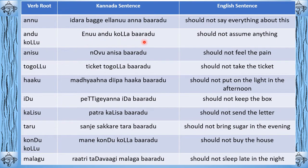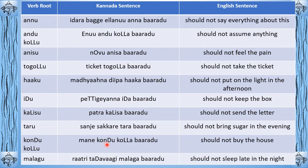'Annu' — 'idara bagge yellanu annabaradu' — should not say everything about this. Note: 'ellanu' means everything. 'Andukollu' — 'yeenu andukollabaradu' — should not assume anything. Note: 'yeenu' means anything at all. 'Anisu' — 'nobu anisabaradu' — should not feel the pain. 'Togollu' — 'ticket togollabaradu' — should not take the ticket. 'Haakku' — 'madhyana dheepa haakabaradu' — should not put on the light in the afternoon. 'Eadu' — 'petti yeenna idabaradu' — should not keep the box. 'Kalisu' — 'patra kalisabaradu' — should not send the letter. 'Taru' — 'Sanjay sakkaray tharabaradu' — should not bring sugar in the evening.